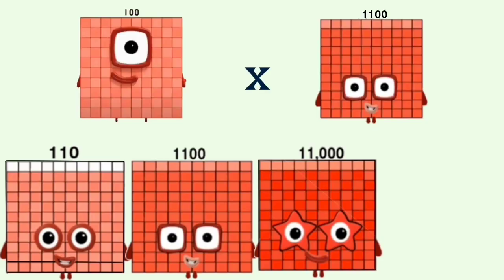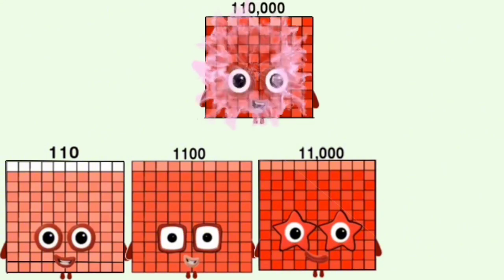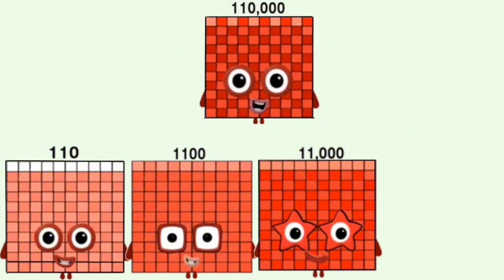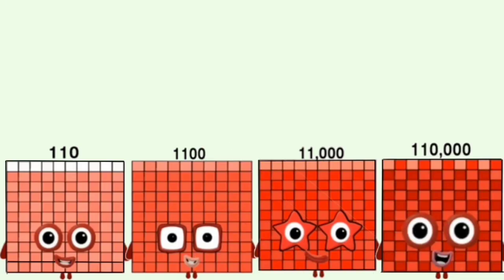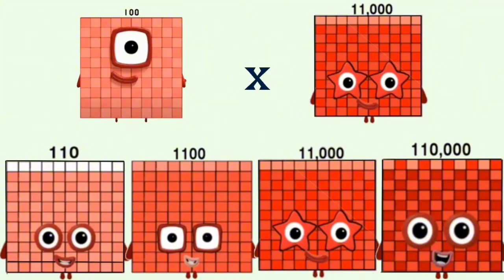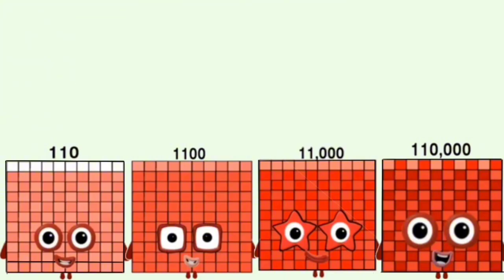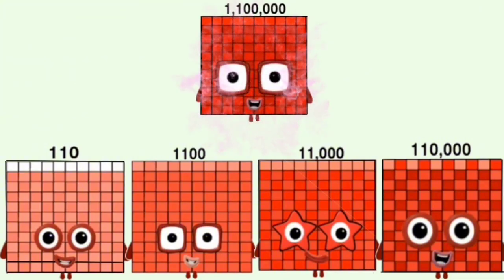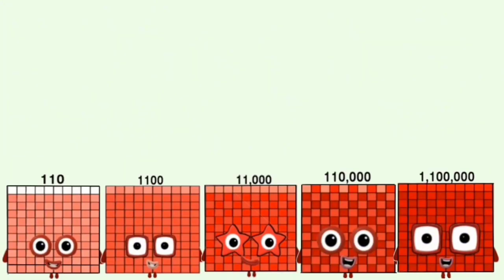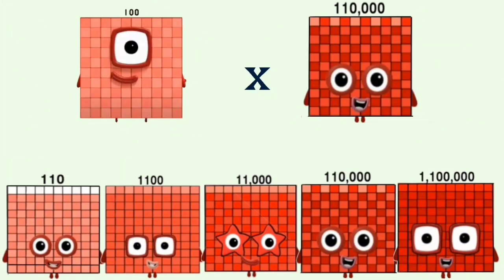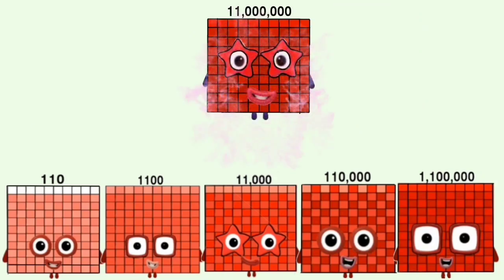100 times 11,000 equals 110,000. 100 times 11,000 equals 1,100,000. 100 times 110,000 equals 110,000.